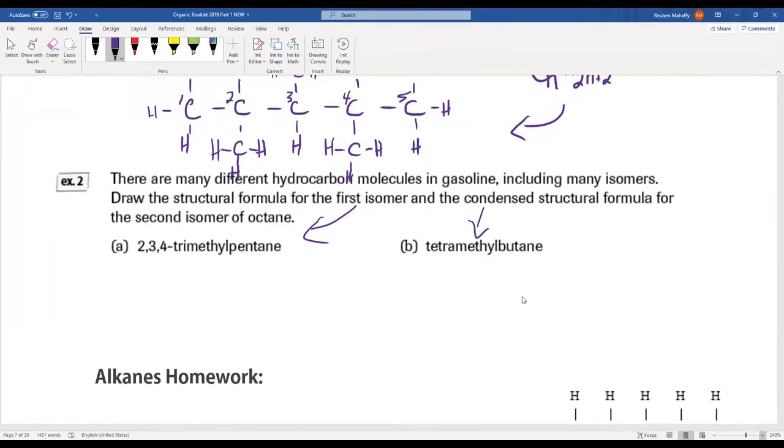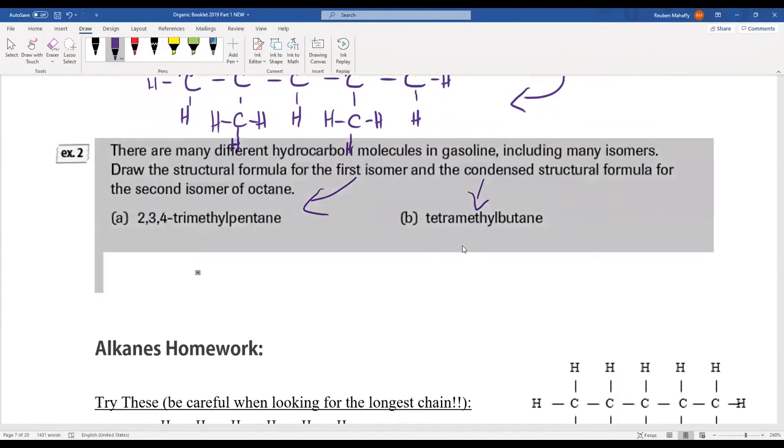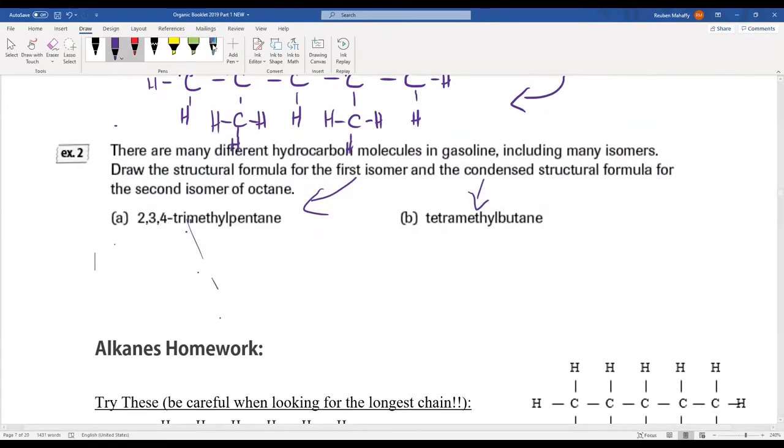My first one here is 2,3,4-trimethylpentane. I'm going to start by laying out my backbone—it's got a pentane backbone, so that should be five carbons in the backbone: one, two, three, four, five. This one's got three methyls on carbons two, three, and four. I'm going to face one of them up and the next one down and this one up just to give myself a little bit more room to work with. Then I've placed in all my carbons, now I can come and fill up my carbons with hydrogens. Again, each carbon wants to have four bonds, so I'm going to add enough hydrogens until that's true.